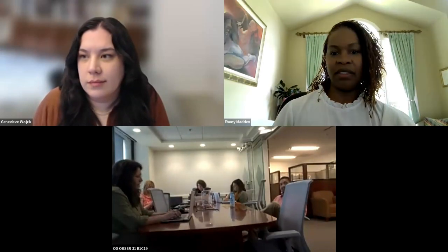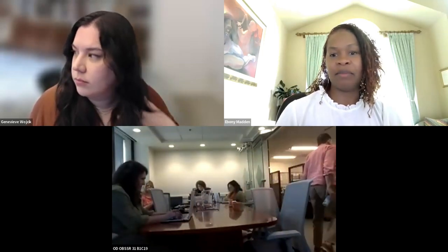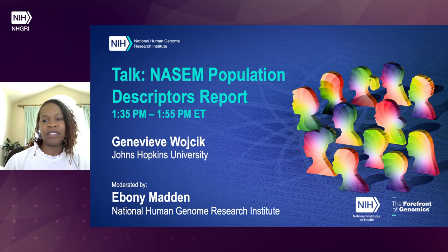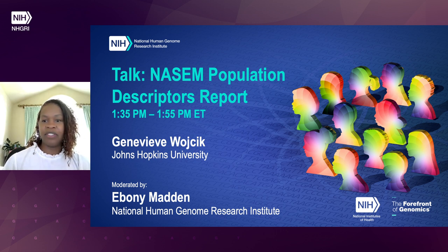Thank you, Joannella. It's already starting out to be an amazing workshop. I am pleased to introduce our next speaker, Jen Wojcik. She is an assistant professor of epidemiology at Johns Hopkins Bloomberg School of Public Health. She's a statistical geneticist and genetic epidemiologist whose research focuses on methods development for diverse populations, specifically admixed populations. The majority of her research is focused on improving statistical methods for complex trait mapping and polygenic risk scores for these populations to address existing health inequities and ensure downstream translation for all.